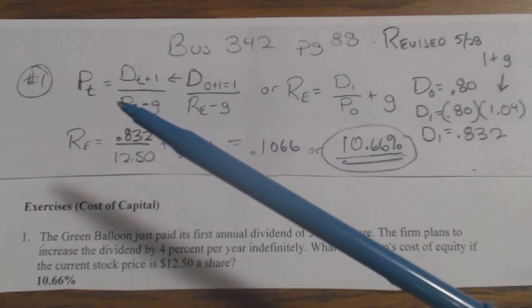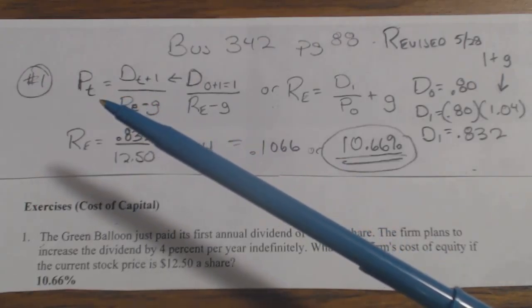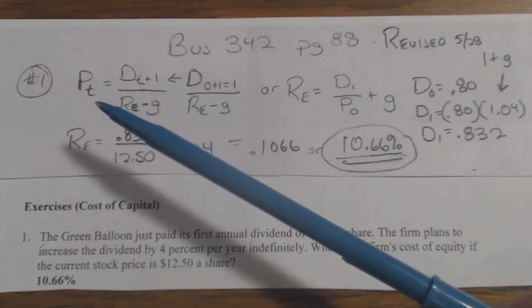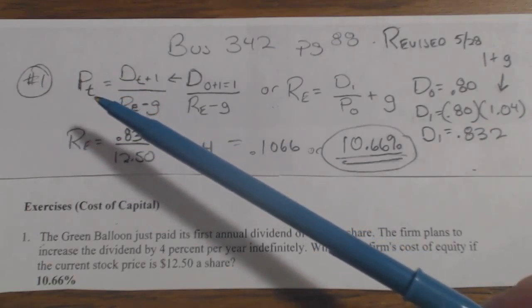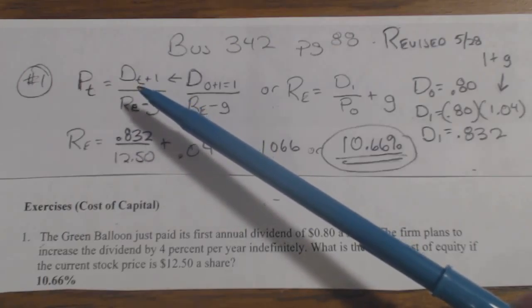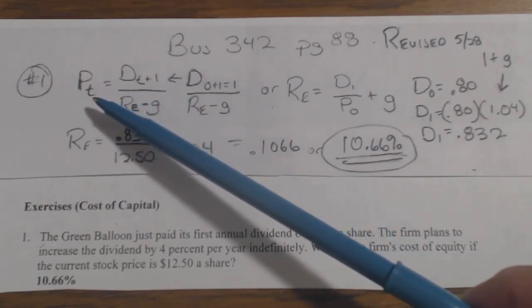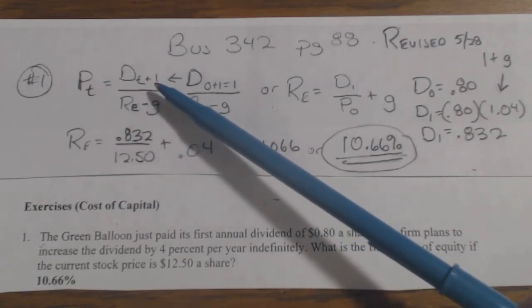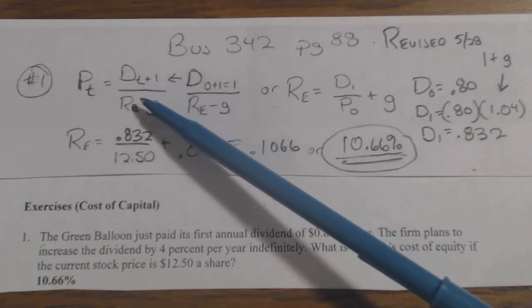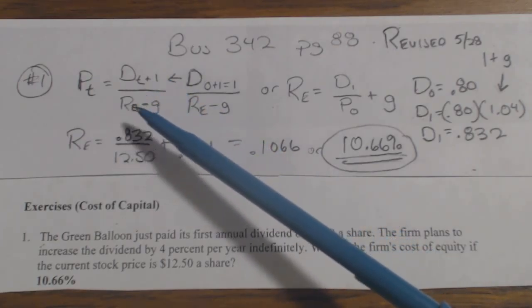If you remember the formula from a few sections back, P0, I mean Pt, which is price at time t equals Dt plus 1, so this is 0, this would be 0 plus 1, so this would be D0, over R minus G.